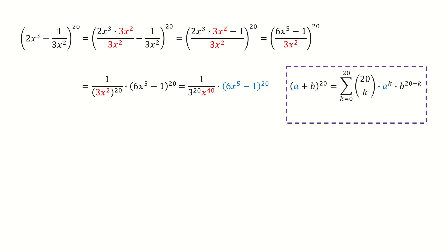And recall the formula for the binomial expansion. And here we set a equals to 6 times x to the power 5, and b equals to minus 1. Because we want the term for the x to the power 40, so we need to set k equals to 8.